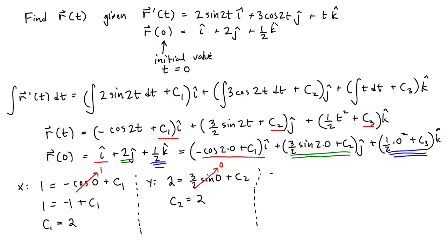Now let's do the z component. The z component gives us 1 half on the left-hand side equals 1 half times 0 squared plus C3 on the right-hand side. Since 1 half times 0 is 0, this leaves us with C3 equal to 1 half. We have now found all our constants of integration.